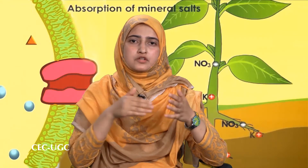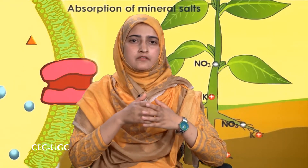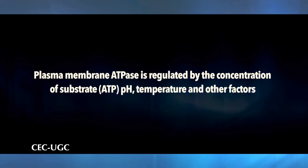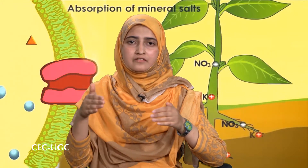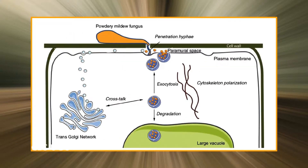The functional specificity of each isoform is not yet fully understood. It may alter the pH optimum and allow transport to be regulated differently for each tissue. Like other enzymes, the plasma membrane ATPase is regulated by the concentration of substrate, pH, temperature, and other factors. In addition, H+ ATPase molecules can be reversibly activated or deactivated by specific signals such as light, hormones, and pathogen attack.